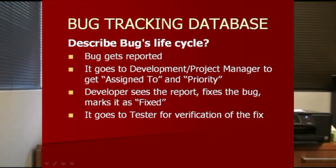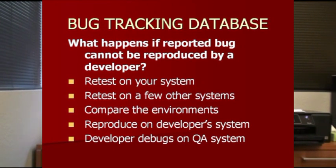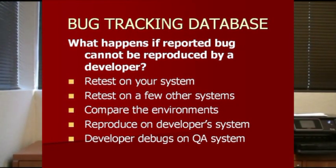What happens if a reported bug cannot be reproduced by the developer? The developer marks the bug report status as 'Cannot Reproduce' and it goes back to you. You then retest that same bug on your system by following the steps exactly. Sometimes it comes back to you a month after you reported it, and by then many problems may have already been fixed without your involvement since you reported them at an early stage.